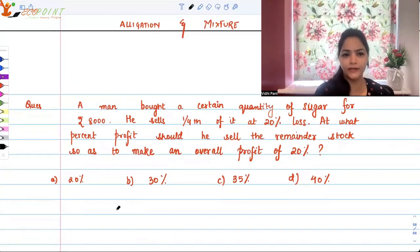So key points in this question: this person has bought sugar for Rs 8,000, entire amount of sugar. Okay, one-fourth of the sugar.